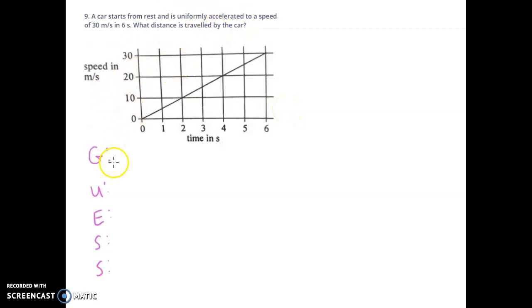So we have given to us in this question, or let me read the question: a car starts from rest and is uniformly accelerated to a speed of 30 meters per second in six seconds. What distance is traveled by the car? So we know it's uniformly accelerated.